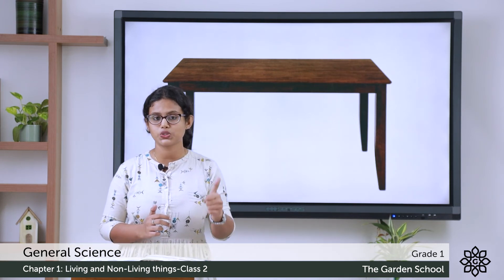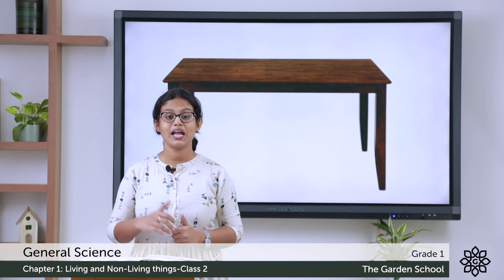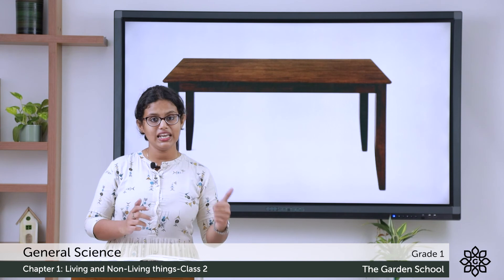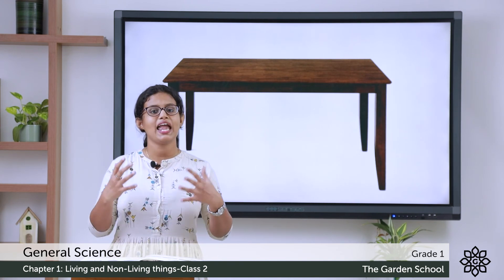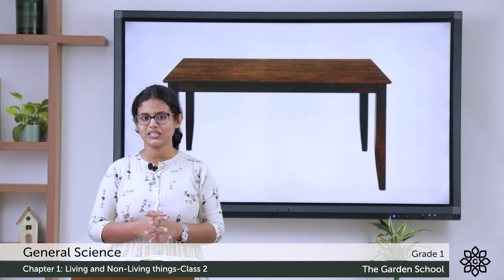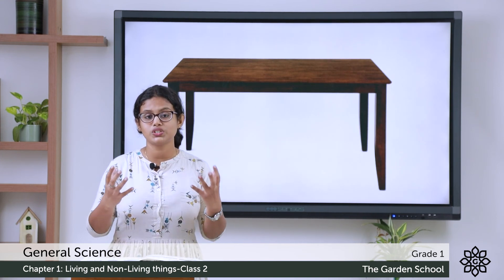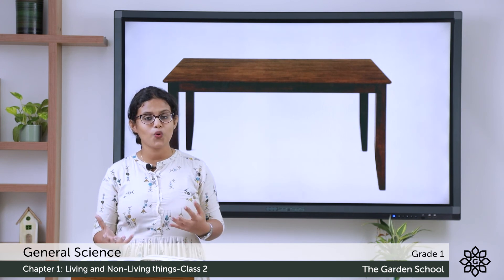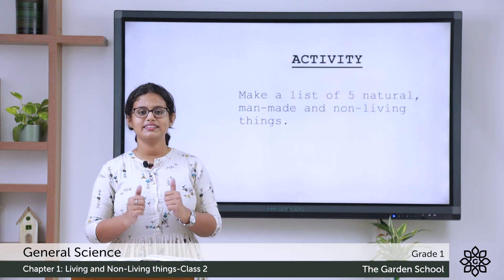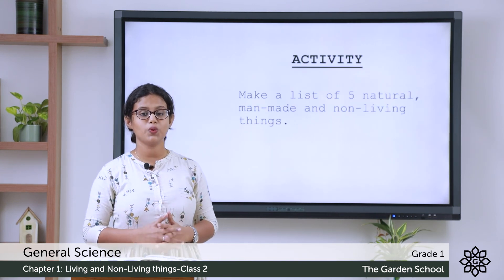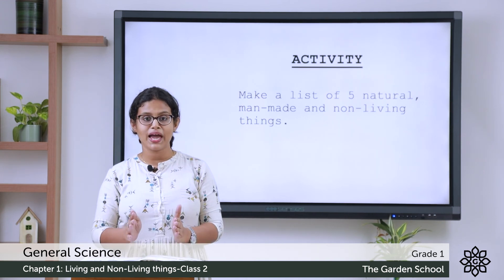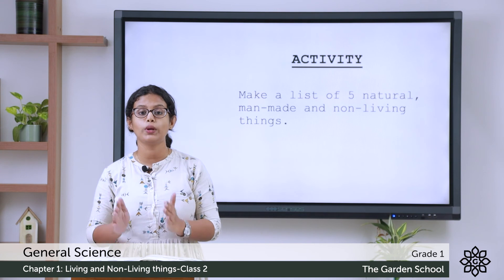So these are the differences between natural and man-made. Natural things: things which are found in nature. Man-made things: things which are made by people. Living things: things which need air, water and food to live. Non-living things: things which do not need air, water and food to live. There is an activity for you — make a list of five natural, five man-made and five non-living things in your notebook.